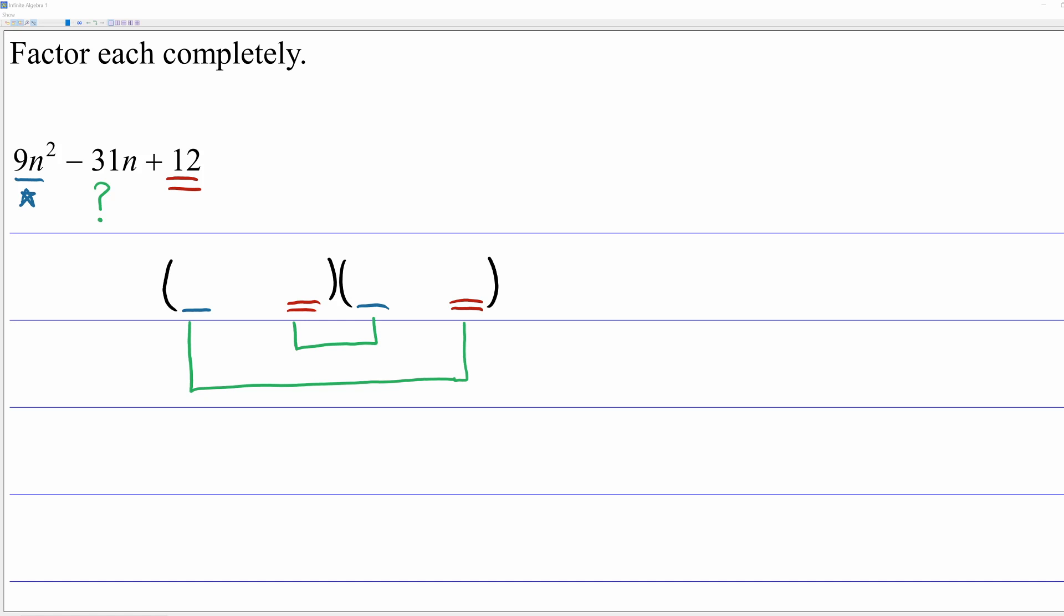But when you are doing these yourself, actually write it out in pencil. Worst case scenario, you can take a guess, but most people typically do a little bit of mental math along the way. The answer here happens to be n minus 3, and 9n minus 4.